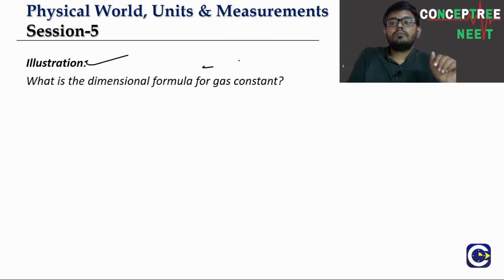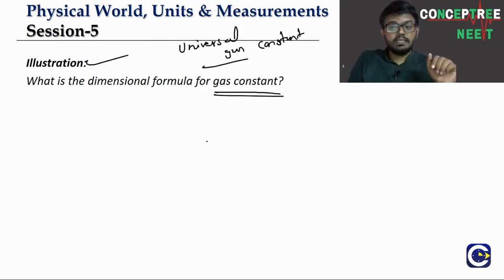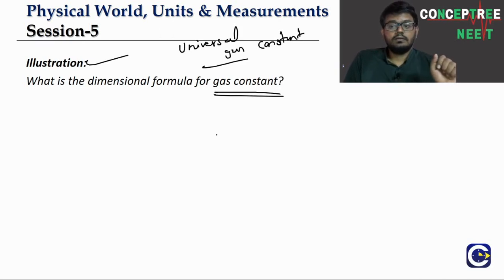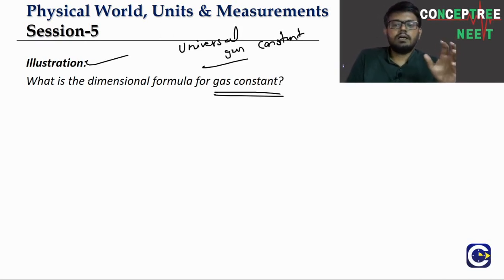What is the dimensional formula for the gas constant R? The gas constant can also be called the universal gas constant. Unlike the spring constant which depends on the spring, the gas constant is always the same value for all gases — that is why it is called universal. We will learn about it in the kinetic gas theory chapter.